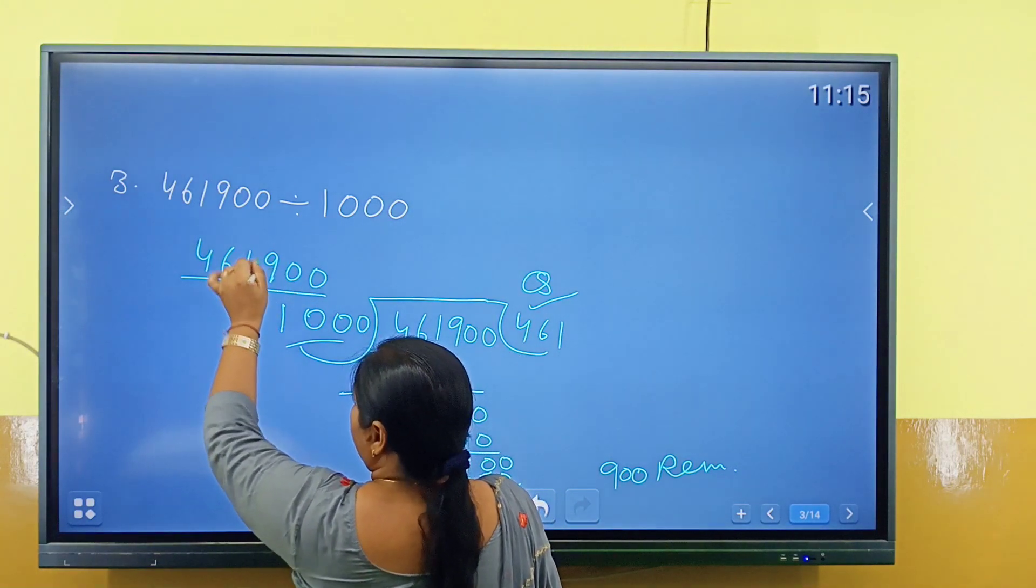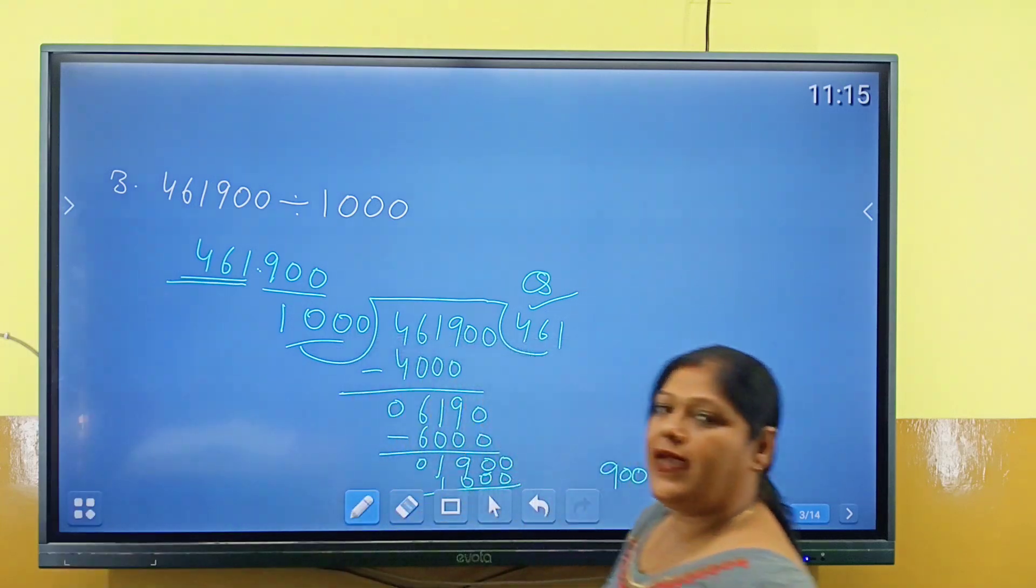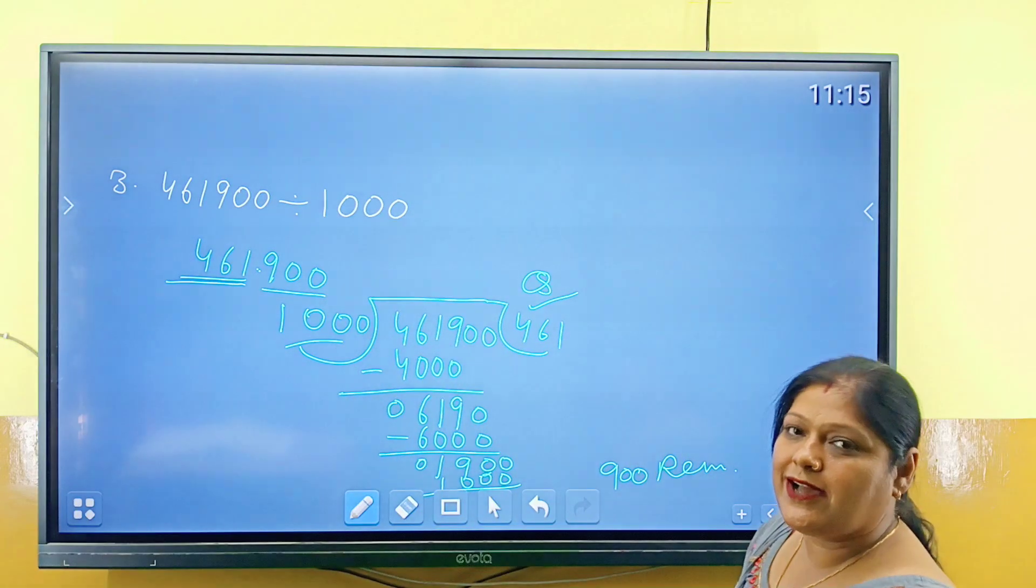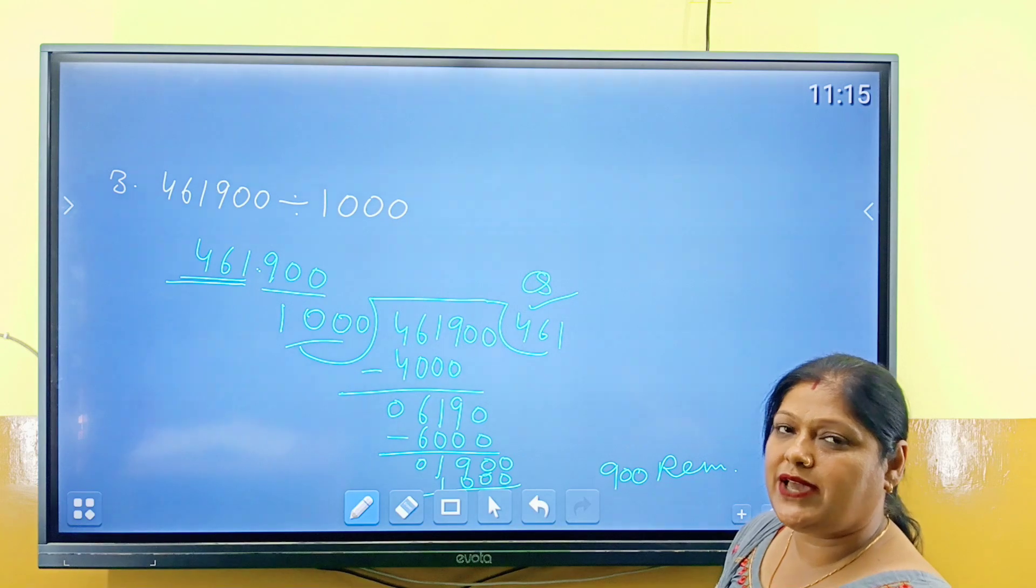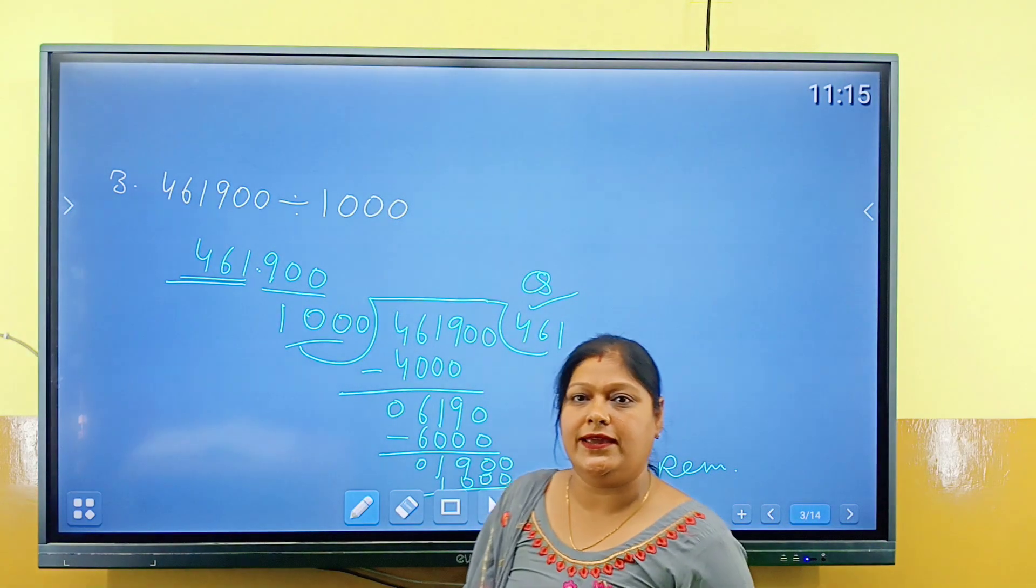And if we get to divide, we can do three digits, we can do point. First number hamara quotient hota hai, and point ke baad ka jo number hota hai, wo kya hota hai student? Remainder hota hai. Aise hi student aapko aage ke saare karenge.